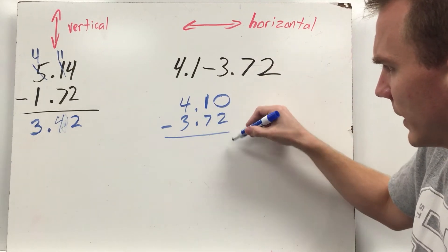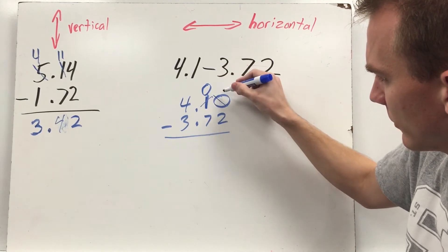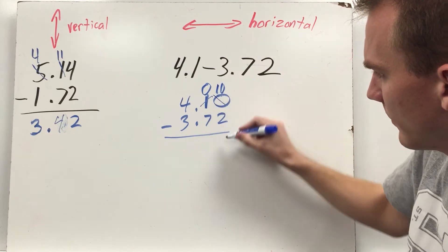Now I can subtract, but zero minus two, I have to regroup. So I take my one-tenths, I'm down to zero-tenths, take my zero-hundredths, and now I have ten-hundredths. Ten minus two is eight.